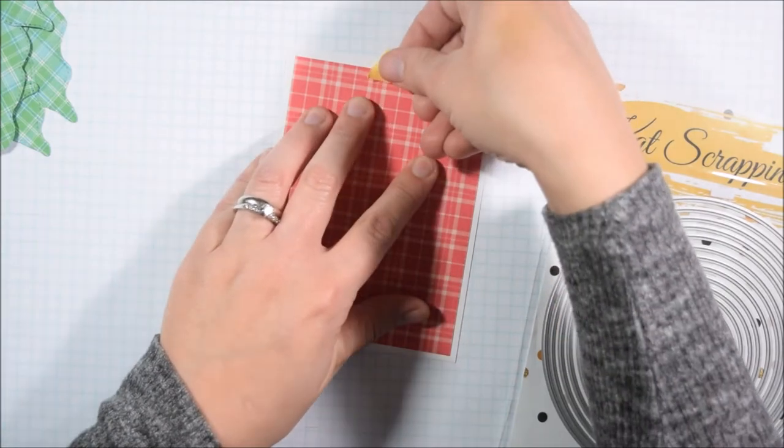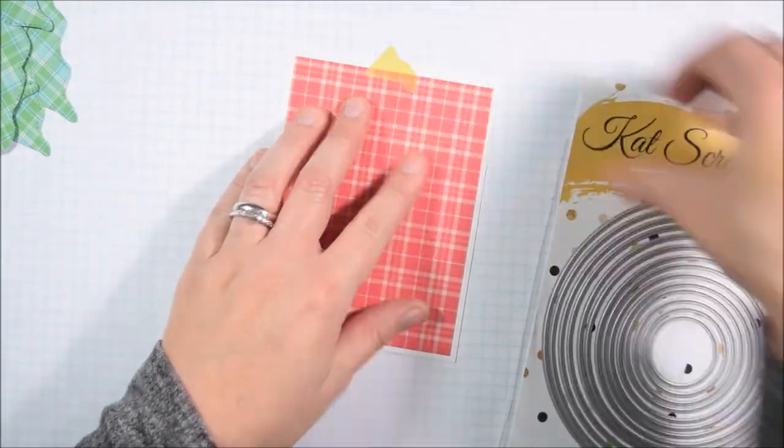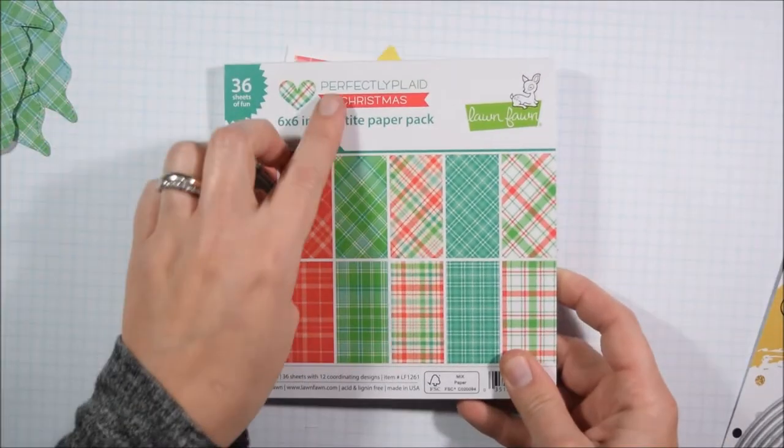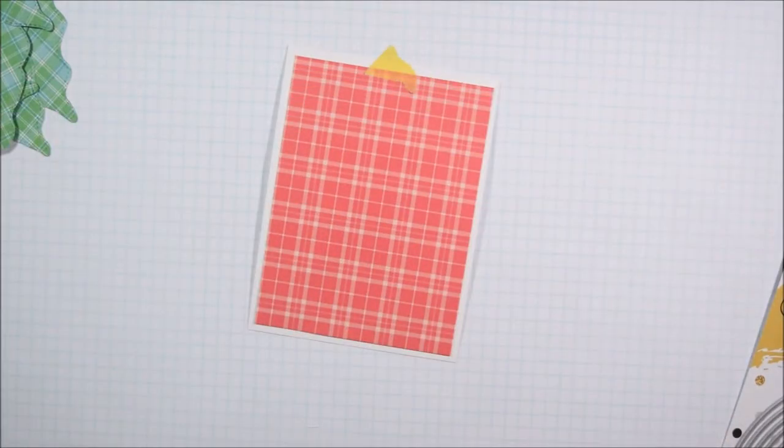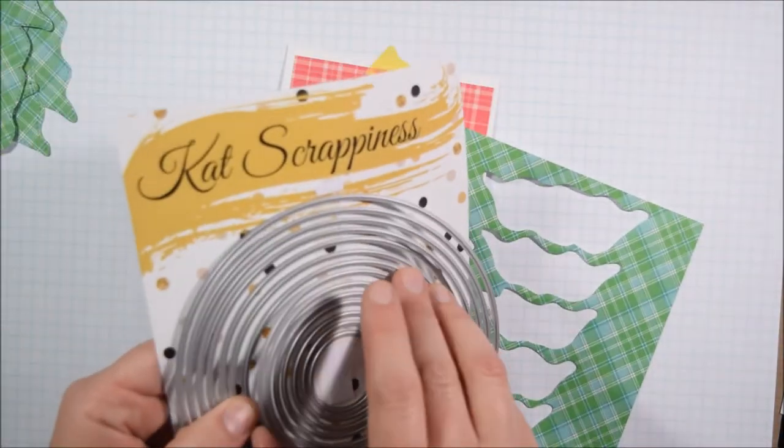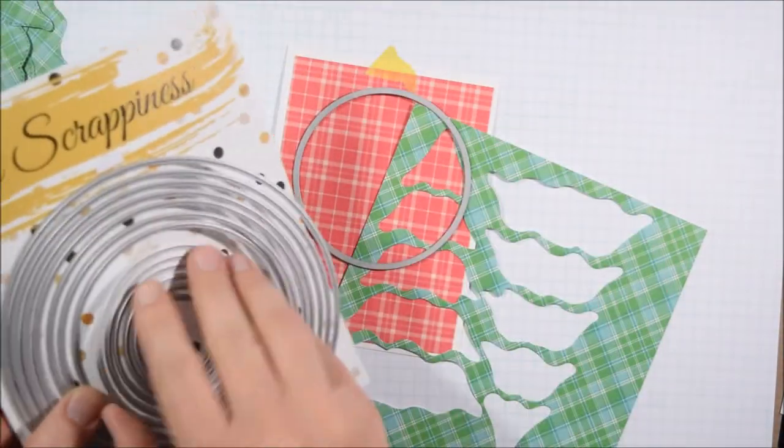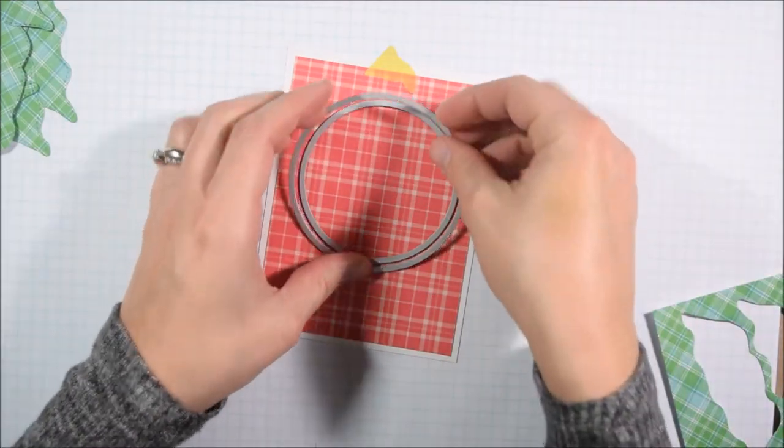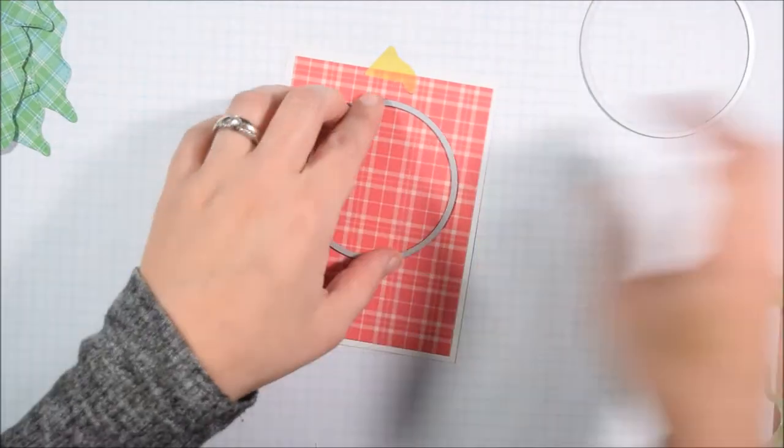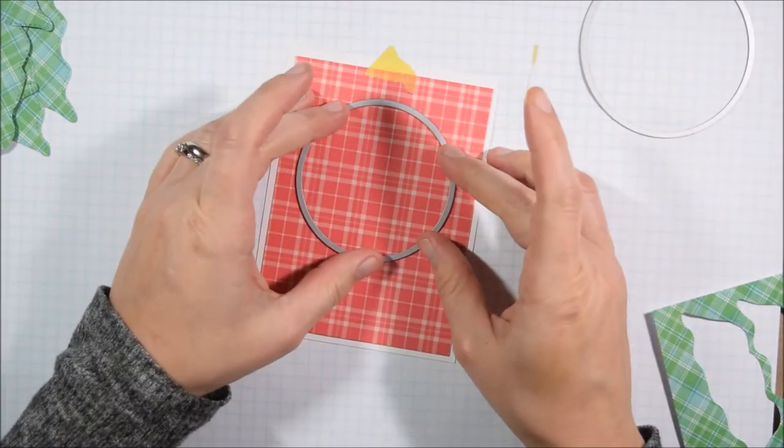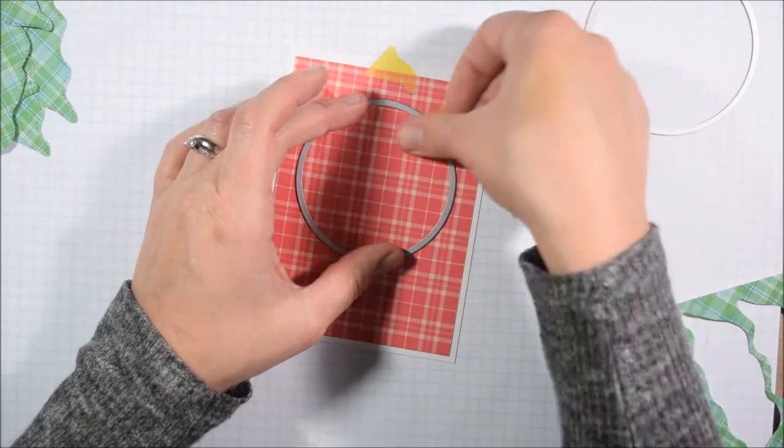Instead of just cutting through one layer, I am going to create a mat around my shaker. I have this perfectly plaid Christmas paper from Lawn Fawn and I cut a piece of white cardstock to four by five and a quarter and then the piece of perfectly plaid paper to five by three and three quarters. It's just a quarter inch smaller all around and gives me this little border.